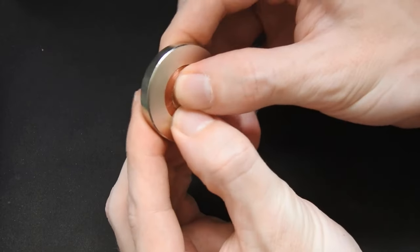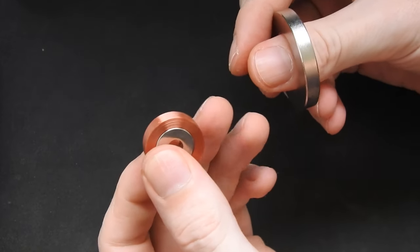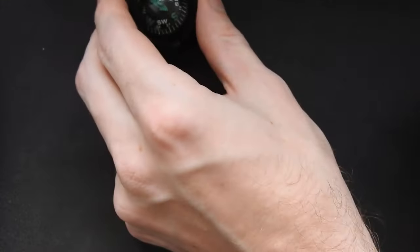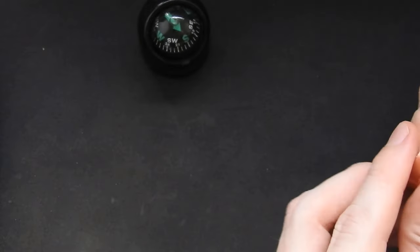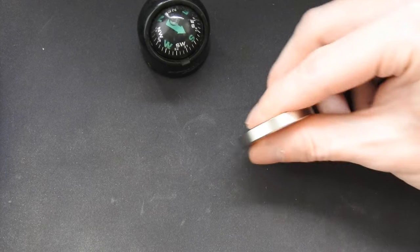And what is also interesting is, I will show you this with the other array. I can just disassemble it by pushing the center magnet out. And now I will take a compass and show you the polarities of these magnets.